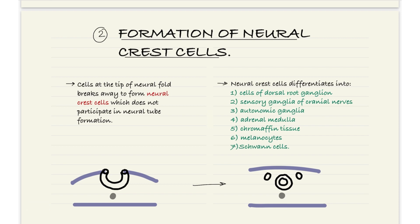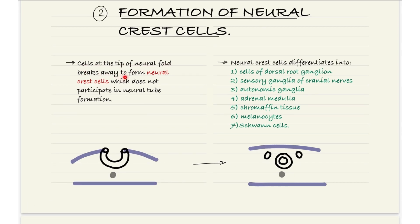We have completed the neural tube formation. Now, the formation of neural crest cells: the cells at the tip of the neural fold break away to form the neural crest cells, which do not participate in the neural tube formation. Here we can see the neural tube and these are the neural crest cells. The neural crest cells differentiate into the following seven things: the cells of dorsal root ganglion, the sensory ganglia of the cranial nerves, the autonomic ganglia, the adrenal medulla, chromaffin tissue, melanocytes, and Schwann cells.